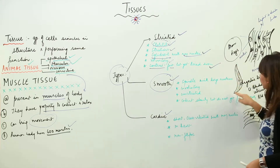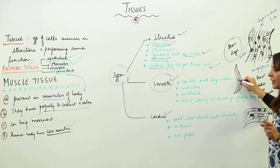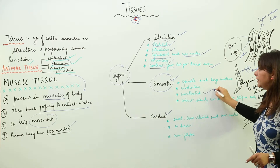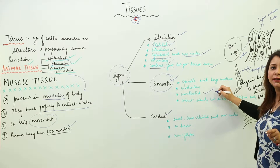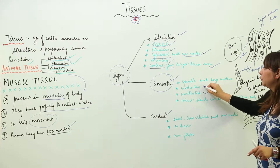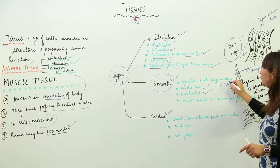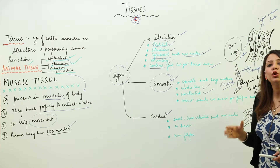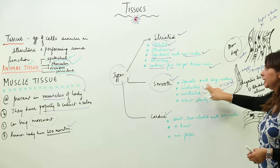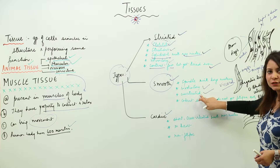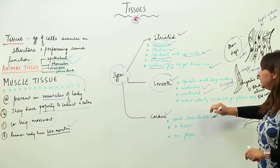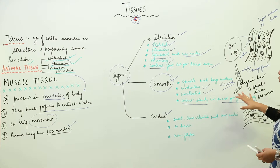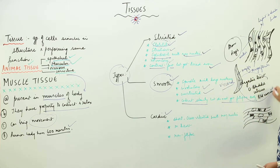Coming to the second type — smooth muscles. They are spindle-shaped with only one large nucleus. They are also myofibrils but have no light and dark bands, so they are unstriated muscles. They are present in parts that do not work according to our will, making them involuntary or visceral muscles. They contract slowly but can remain contracted for a longer period.